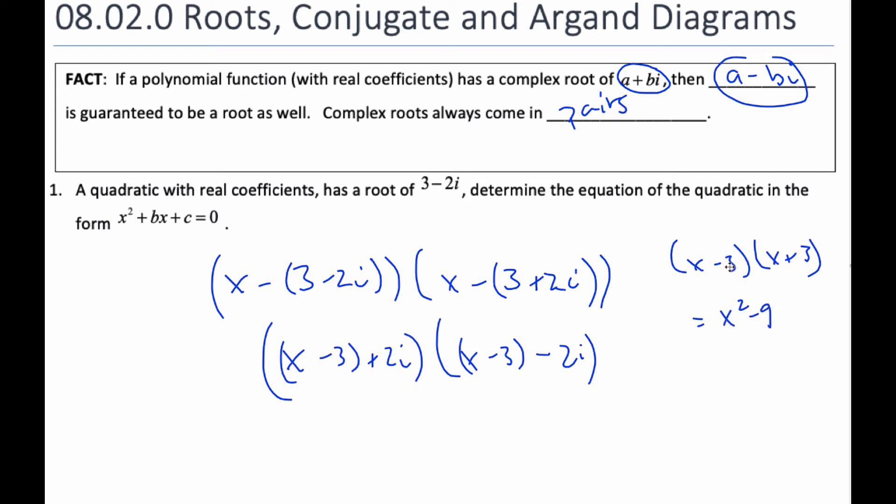because the minus 3x and the plus 3x cancel out. And so this is difference of squares, makes it really easy to multiply this. By changing the parentheses around, it makes it easy, so then I know it's going to be x minus 3 squared minus 2i all squared.